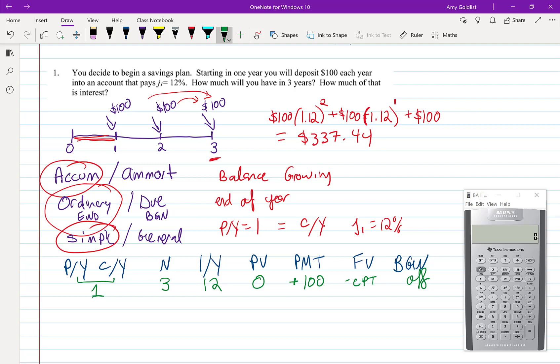So let's calculate this. I'm going to put everything in. Starting with PYCY, I make sure that that is one. It is. N is three. Our IY, again, was 12. Present value, I put in zero. Now I'm going to actually put in that payment of 100. And I'm left with computing the future value. And I get negative 337.44, which is exactly the same that we got by algebra.